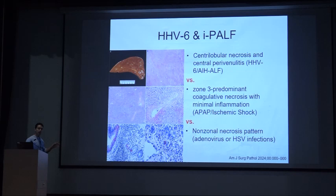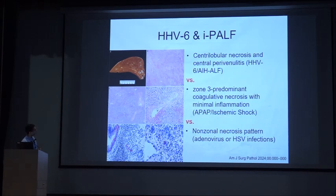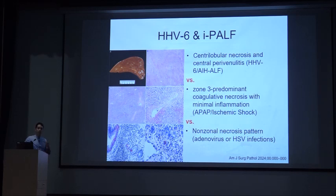HHV6 is also recognized — we recently had one case in our group. A case series of six pediatric HHV6 cases showed on biopsy predominantly zone 3 involvement with centrilobular necrosis and severe perivenulitis with severe inflammation. Comparing to paracetamol or ischemic injury, which have necrosis with minimal inflammation, or other viruses which have non-zonal multilobular necrosis, the conclusion is: if you have zone 3 changes, zone 3 severe inflammation, and zone 3 necrosis, think of HHV6 as one of the etiologies.